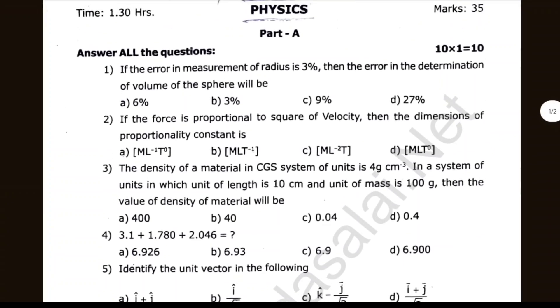If the error in the measurement of radius is 3%, then the error in the determination of volume of a sphere will be dash. If force is proportional to the square of velocity, then the dimension of the proportional constant is dash.